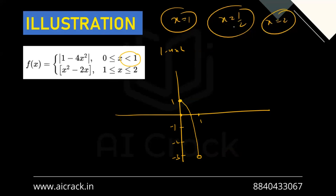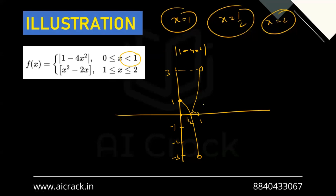Since 1 - 4x² equals zero at x = 1/2, this is where the modulus creates a reflection. To take the modulus, we place a mirror at the x-axis for the negative portion. The reflected part reaches y = 3 (since the original was -3). This gives the final graph of |1 - 4x²|.